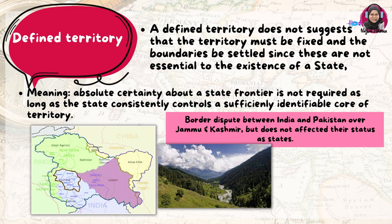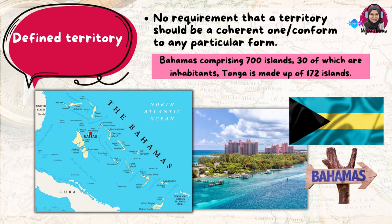For example, the border dispute between India and Pakistan over Jammu and Kashmir does not affect their status as states. There is also no requirement that a territory be a coherent one or conform to any particular form — for example, the Bahamas comprises 700 islands.